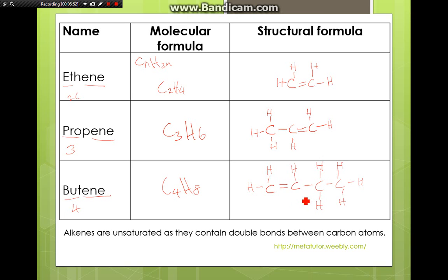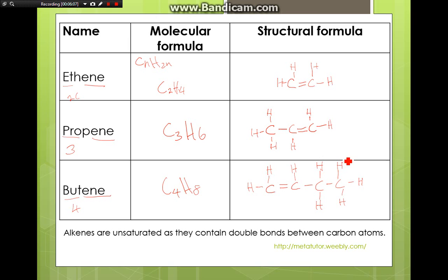If you are thinking, can alkenes contain more than one double bond? Yes, it will still be considered an alkene. But then it will not fulfill the general formula anymore. So these are the simplest ones — the alkenes that contain only one double bond.